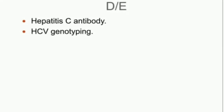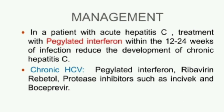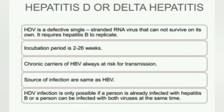Diagnosis includes Hepatitis C antibody test, HCV genotype, and other etiology markers. Management: In patients with acute hepatitis C, treatment with pegylated interferon within 12 to 24 weeks of infection reduces the development of chronic hepatitis C. For chronic hepatitis C, pegylated interferon combined with ribavirin may be included.